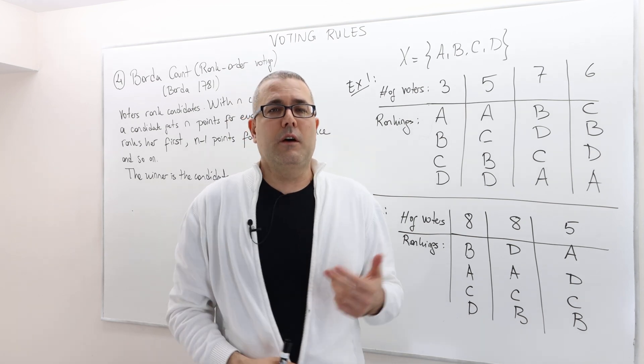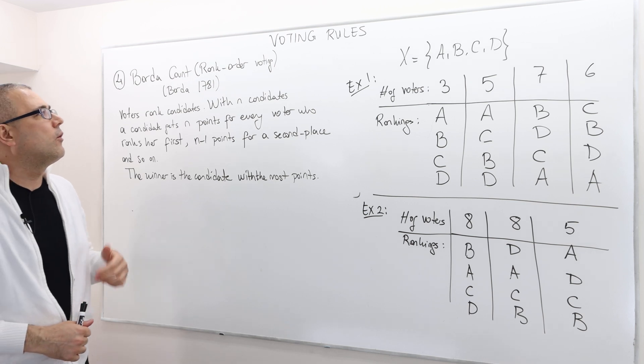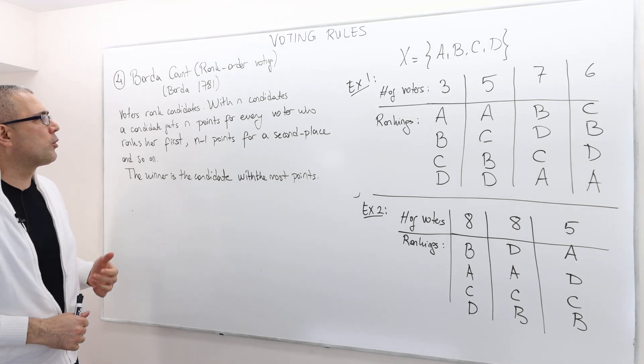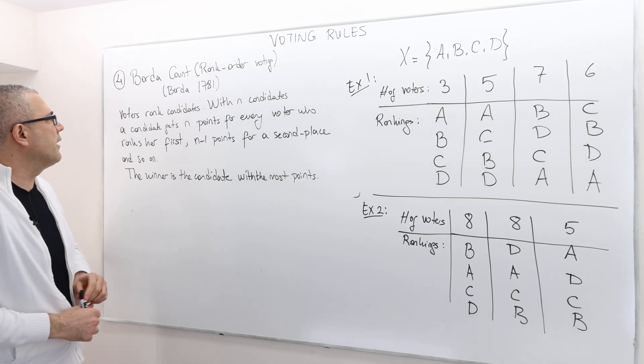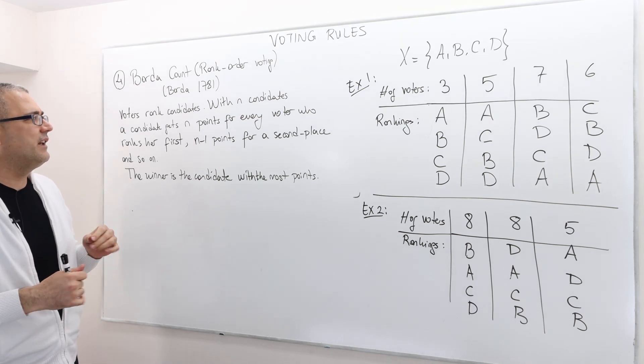Hi folks, our fourth voting rule is called Borda count or rank order voting. It's proposed by Borda in 1781. Once again, voters rank candidates.